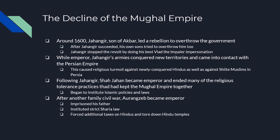Once Jahangir dies, his son Shah Jahan becomes the emperor. One of the first things Shah Jahan does is overthrow his mother and put her in prison. Shah Jahan ends the religious tolerance policies of the Mughals and institutes strict Islamic policies and laws that start to fracture the empire. One important thing Shah Jahan does is build the Taj Mahal — he builds it as a tomb for his favorite wife, named Mumtaz Mahal.